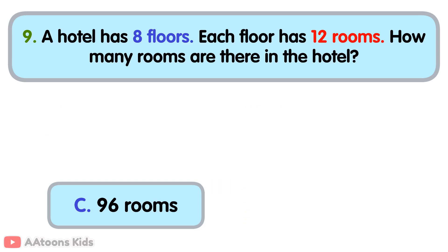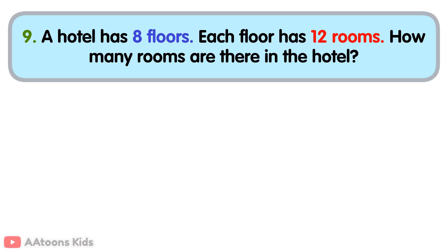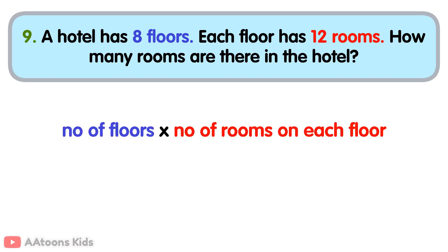Ninety-six rooms. To find the total number of rooms, multiply the number of floors by the number of rooms on each floor. Total number of floors is eight. Number of rooms on each floor is twelve. Now, eight multiplied by twelve is ninety-six. So, there are ninety-six rooms in the hotel.